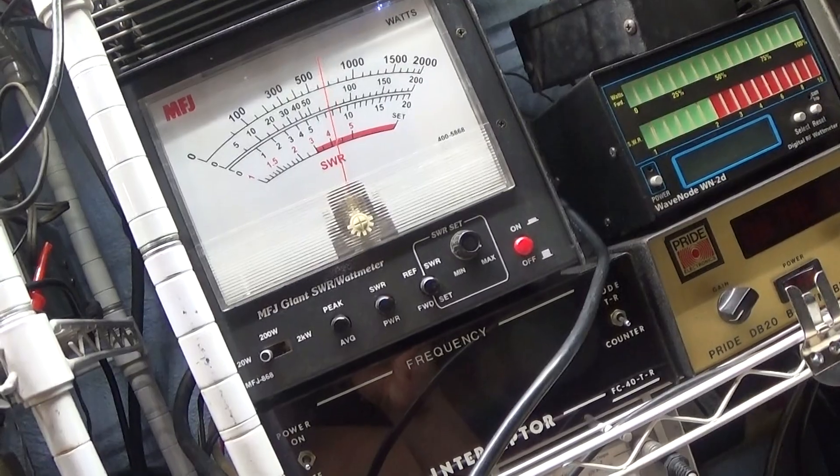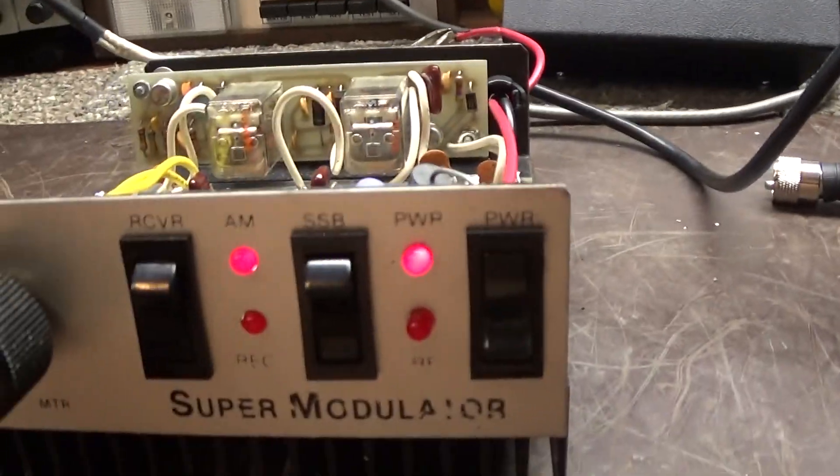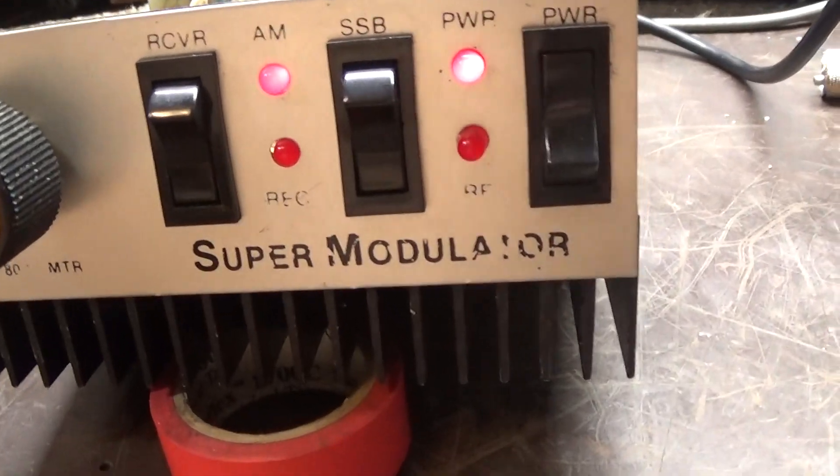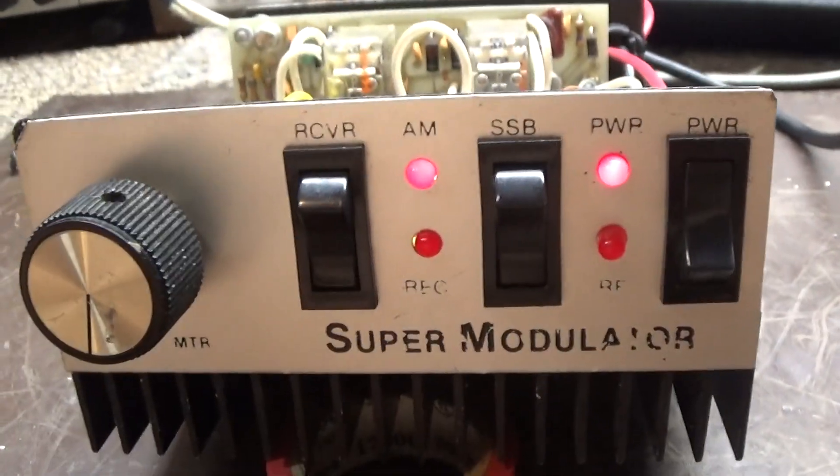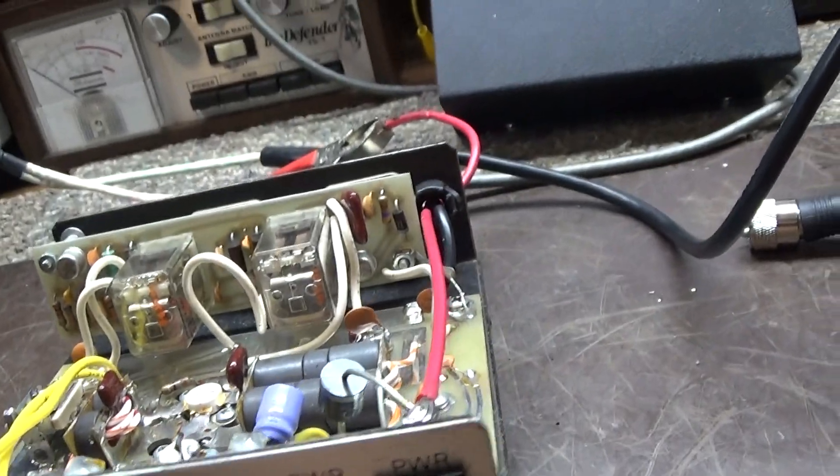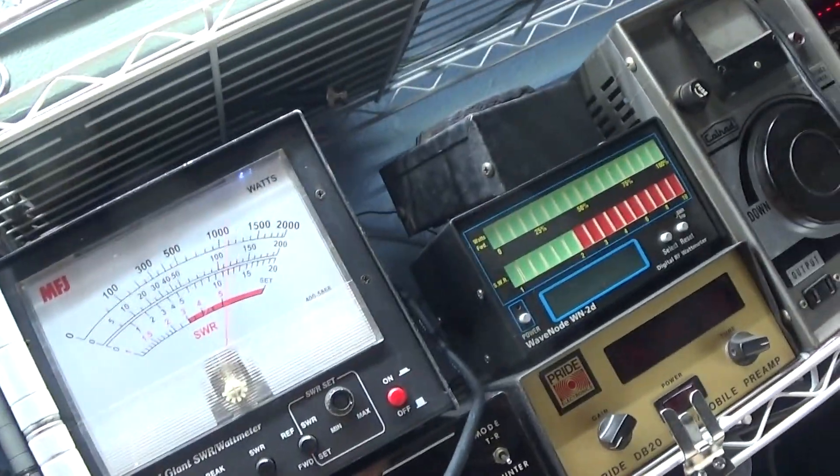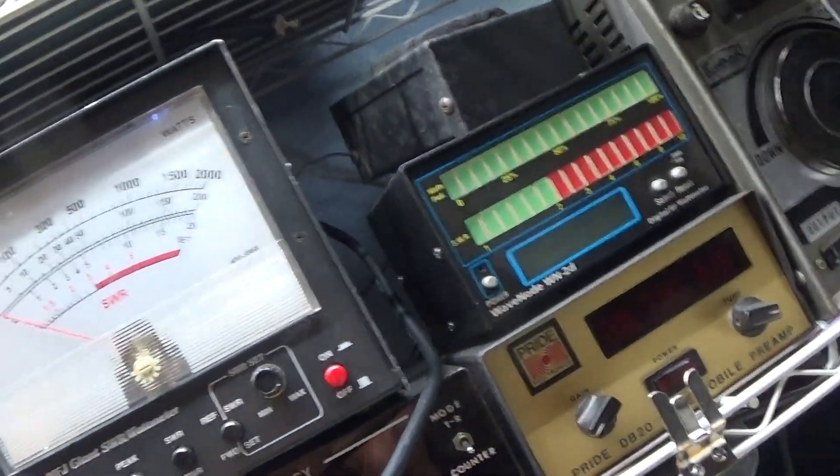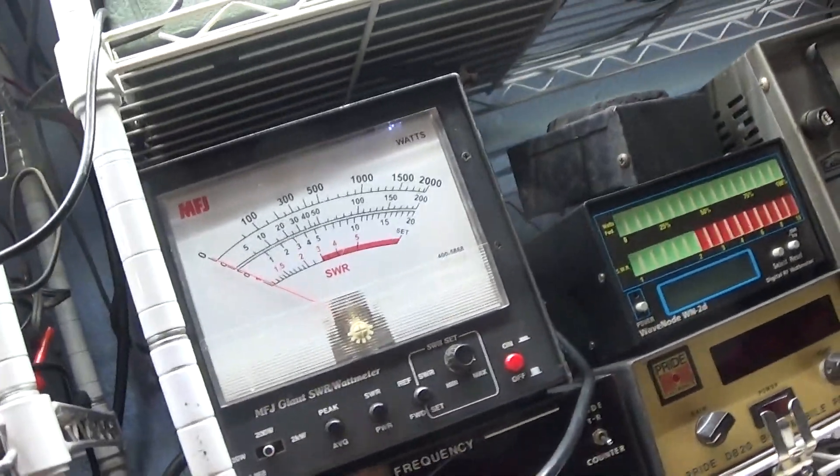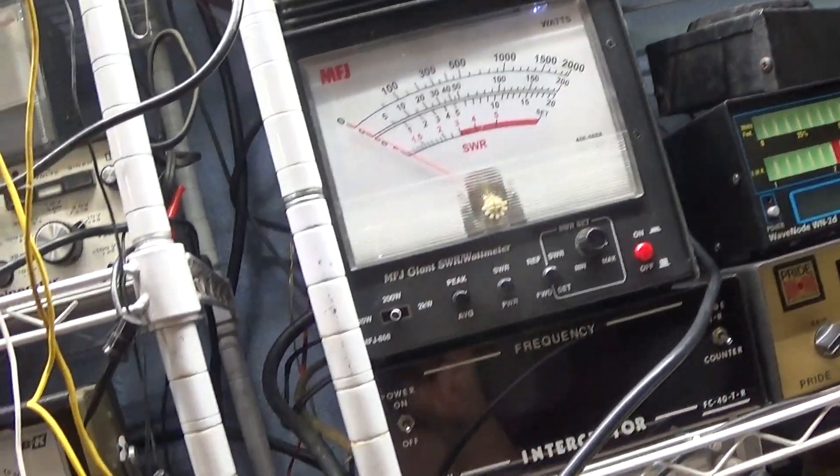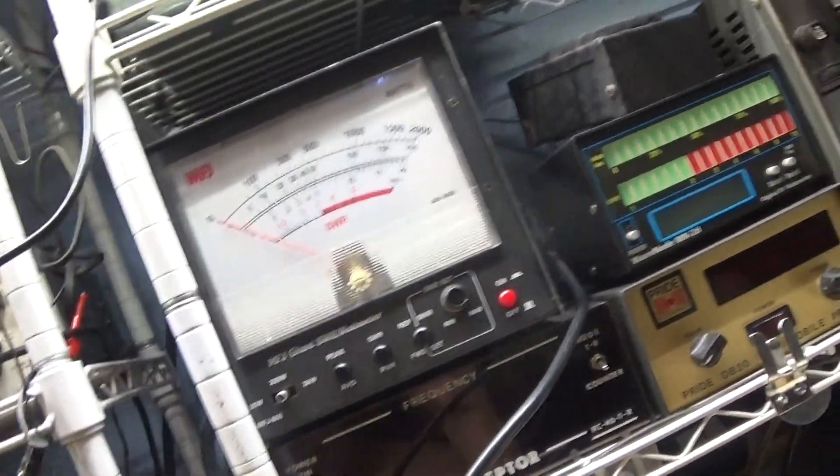Turn the little super modulator on. Got the modulator turned all the way down and going to key it. Let's get off the 20 watt scale over to the 200 watt scale. This is with the radio and modulator all the way down.